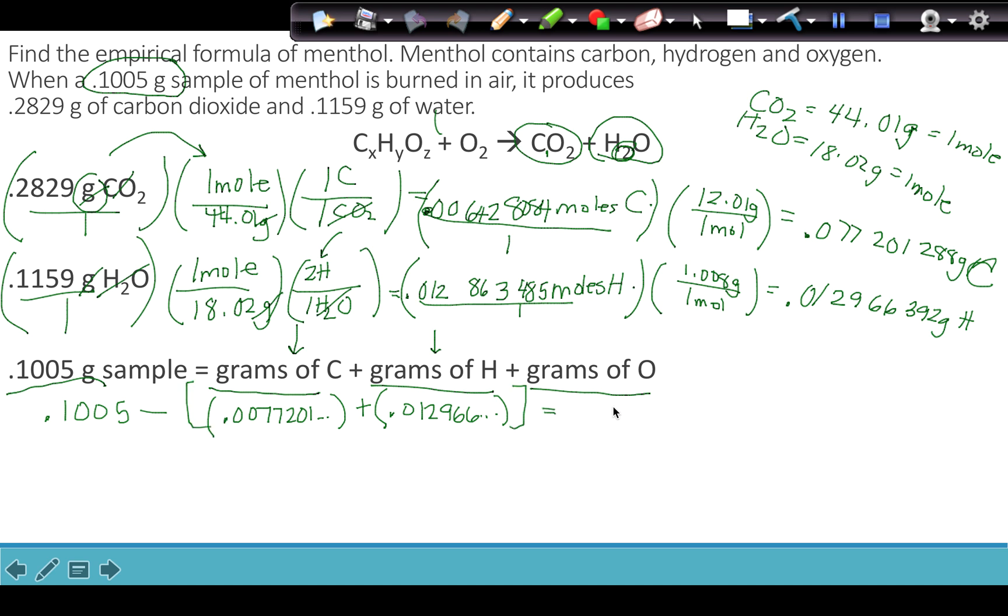And if I take the 0.1005 and I subtract this, I get my grams of oxygen. So you should do that math now. Add the two amounts of grams together. Subtract from the total amount of grams of the sample. And now we're going to have our grams of oxygen. And when we get our grams of oxygen, it's 0.01033232 grams of oxygen.